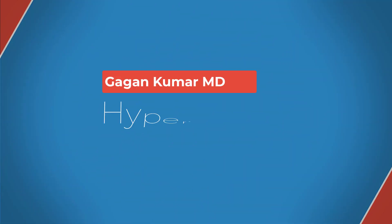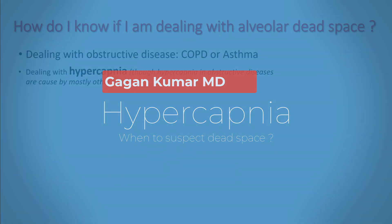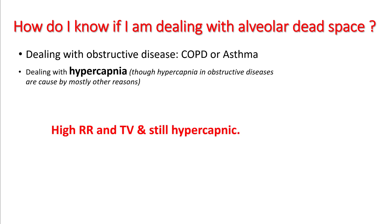Hello everyone. Today we'll be talking about how to suspect dead space and how to measure it. Suspicion for alveolar dead space can be very difficult, and often we think about dead space physiology when we talk about obstructive diseases like COPD and asthma, though you have to understand that hypercapnia in these obstructive diseases are caused by many other reasons as well. You would think about dead space if a patient's respiratory rates are pretty high and the patient is still hypercapnic — that means they're wasting a lot of ventilation.